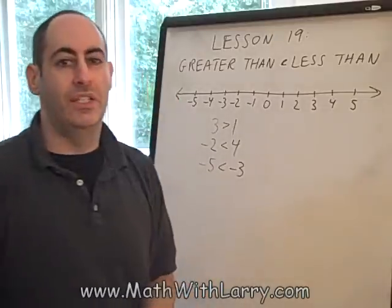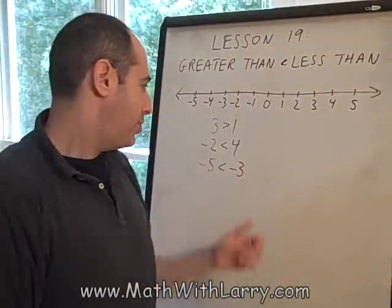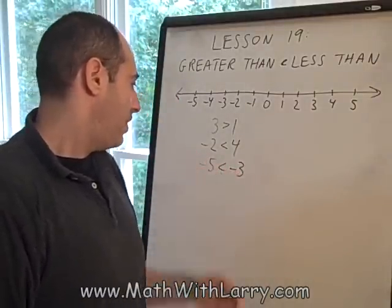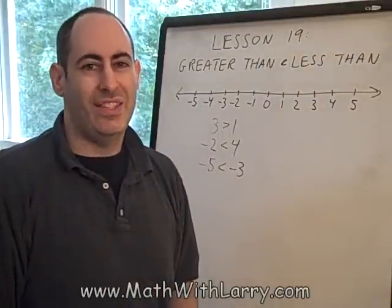Now, be careful with that. A lot of students get confused and just say, well, I know that 5 is greater than 3, so it must be that negative 5 is greater than negative 3. That's not how it works.